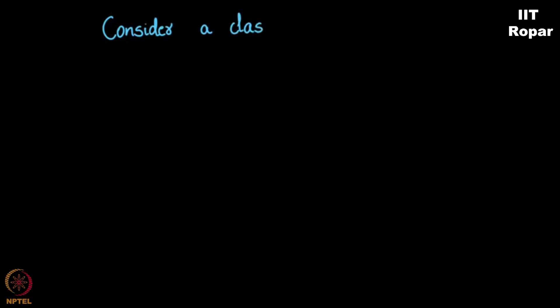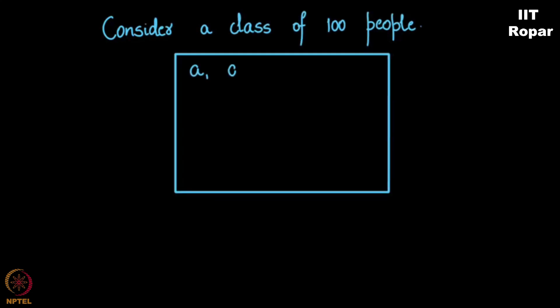Considering a class of 100 people, let's say there are A1, A2 up to A100 people. I'm handling a class and some of them are present in the class, not all are present.